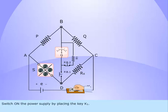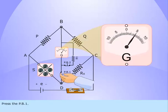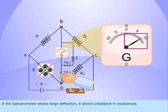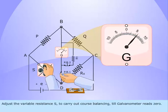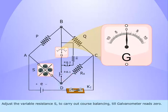Switch on the power supply by placing the key K1. Press the PB1. If the galvanometer shows large deflection, it shows unbalance in resistances. Adjust the variable resistance S to carry out coarse balancing till galvanometer reads 0.